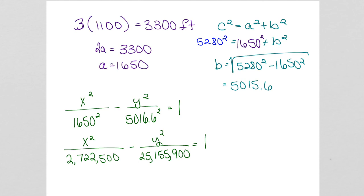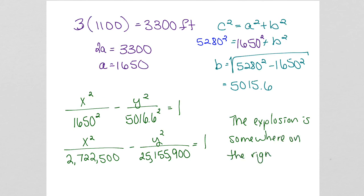Since M1 hears the sound first, the explosion is somewhere on the right branch of the hyperbola closer to M1. It doesn't tell us exactly where, but it gives us an idea of where to find it.